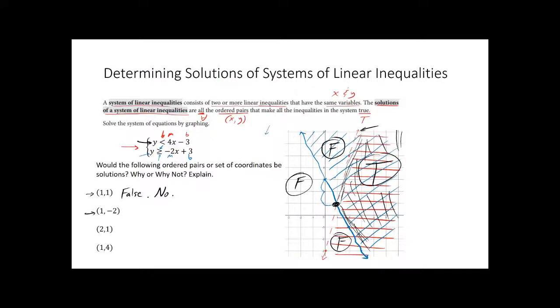Now, 1 comma negative 2. So you go to 1, go to negative 2. That's right here. So is that? Nope, that's false. That's in the false area because it's not shaded by the blue. The blue does not include it. Only the red. Is 2 comma 1. Let's see. 2 comma 1. Hey, hey. 2 comma 1 is in the true area. It's in the overlap. So yeah, that's definitely true. True. So yes, it's a solution.